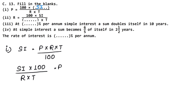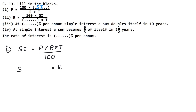Next part says r = 100 × SI / (dash × t). Using the same simple interest formula and isolating r: r stays, SI stays, 100 moves up to multiply, and besides r, what remains are principal and time which go to the denominator. So the blank is P (principal).